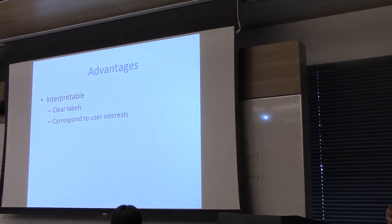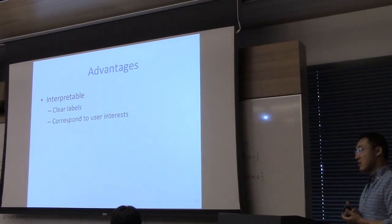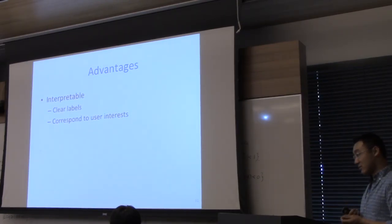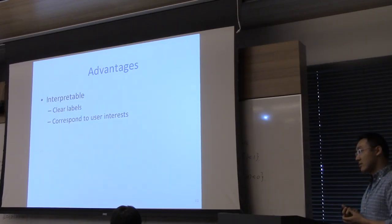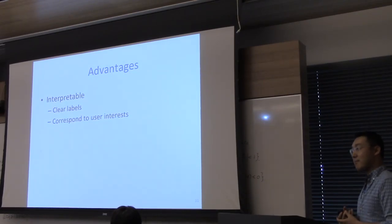For every badge you have a vector of words which is associated with that tag from training. That's right. So once you have an article you can encode it easily. You have a dimension of badges which correspond to these vectors of words. That's how you do dimensionality reduction.